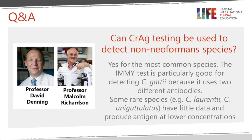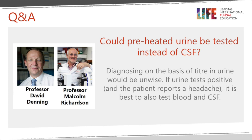Can the CrAg test be used to detect antigens expressed by all species of cryptococcus beyond C. neoformans? Yes — the most common ones certainly. There are rarer species such as C. laurentii and C. uniguttulatus; very little data exist on those but they likely do produce antigen at lower concentrations. They are rare causes of meningitis. The other tests do detect C. gattii, although the IMI test is particularly good at that because of the two antibodies used in the assay.